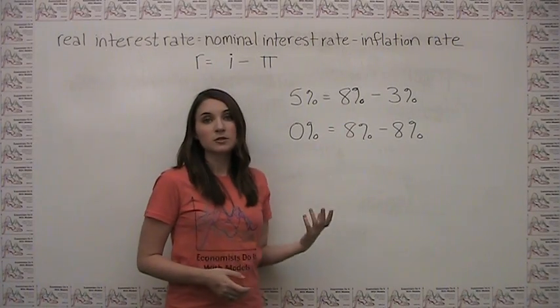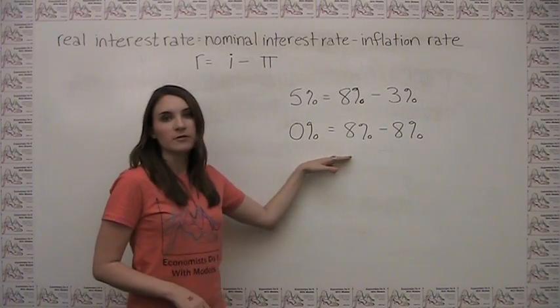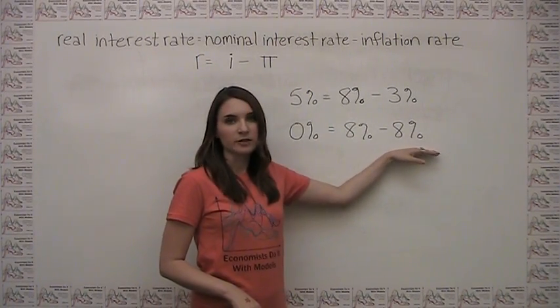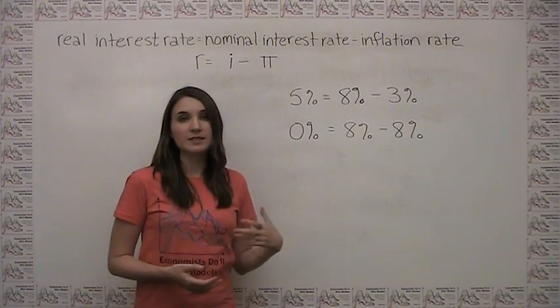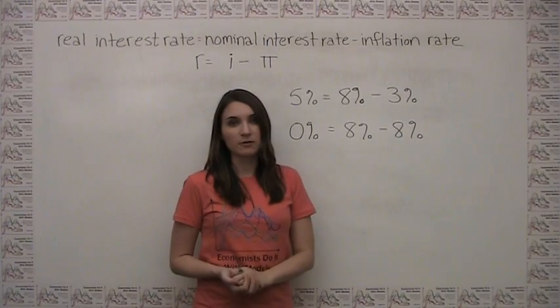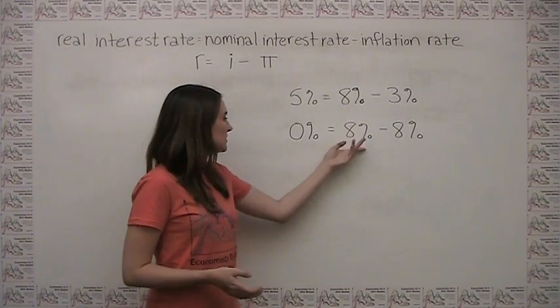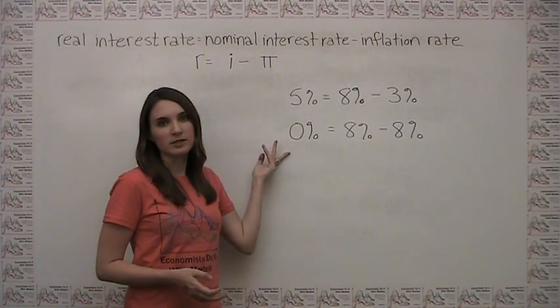This relationship is particularly clear when the nominal rate of interest is the same as the inflation rate. If money in a bank account earns 8% per year, but prices also increased by 8% over the course of the year, the money has in fact earned a real return of zero.